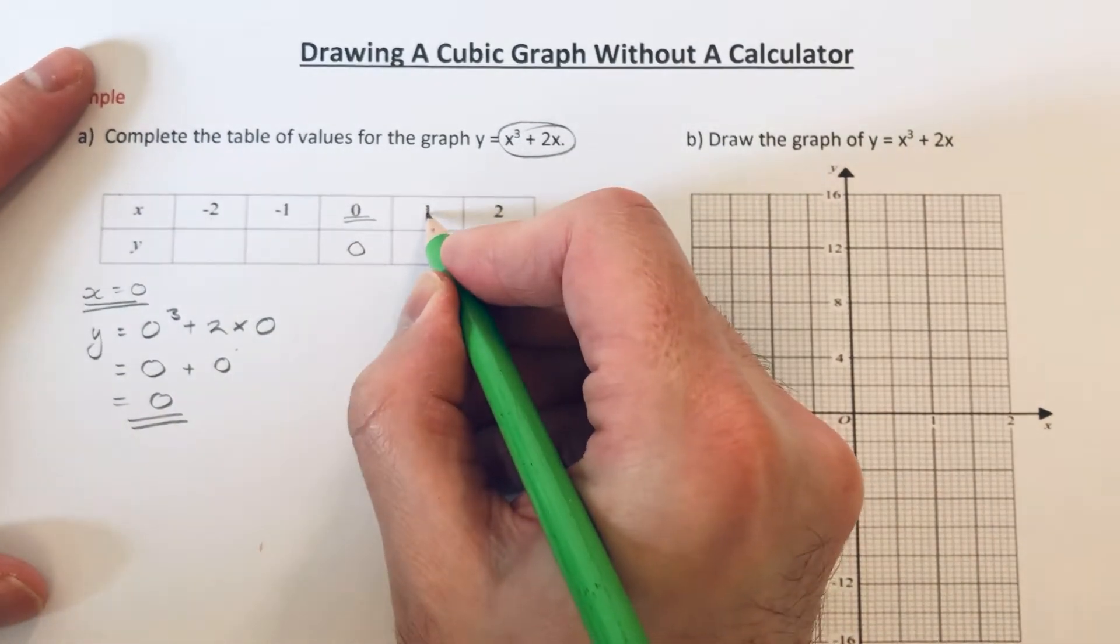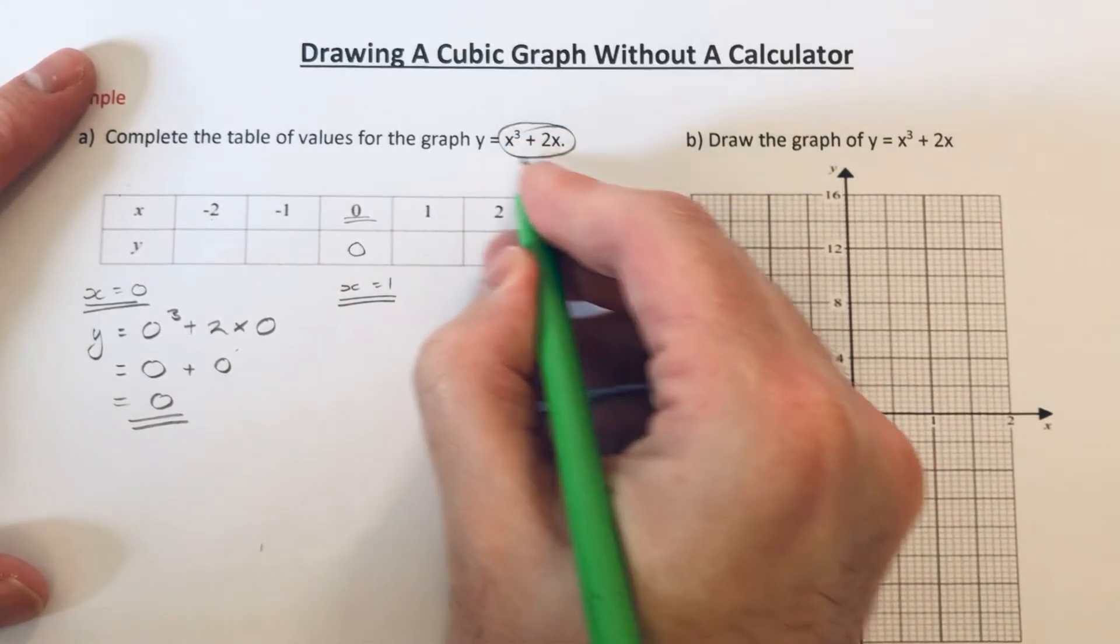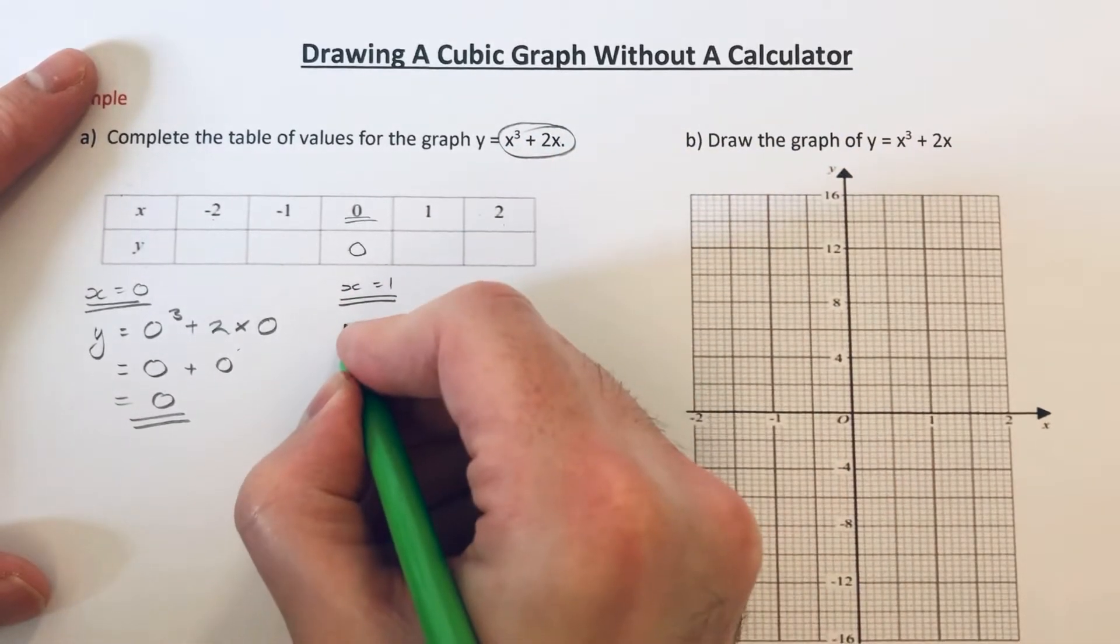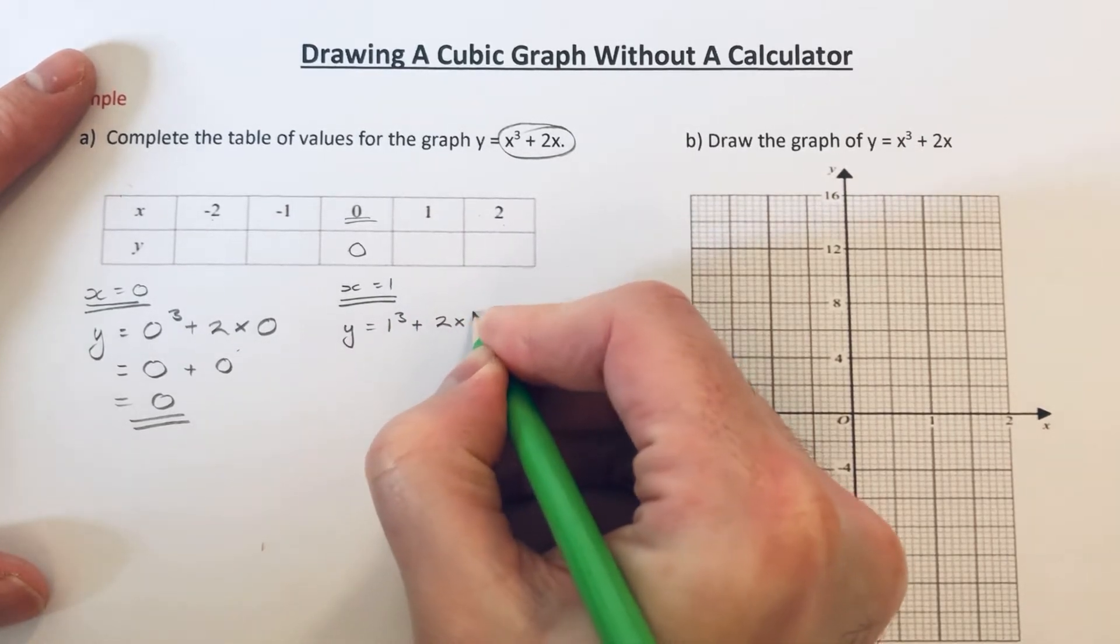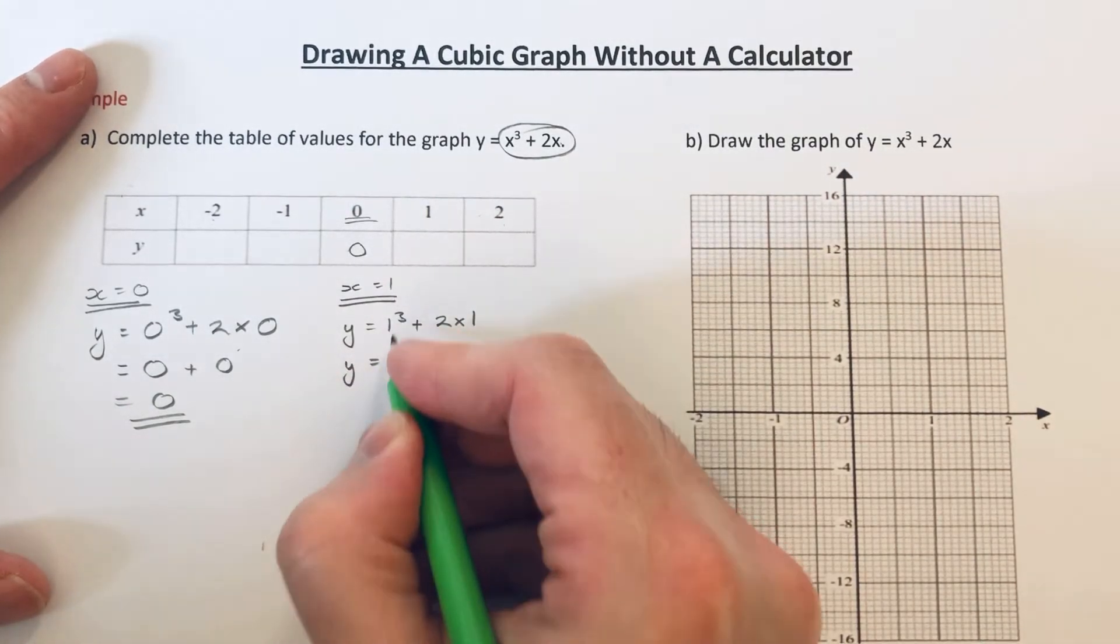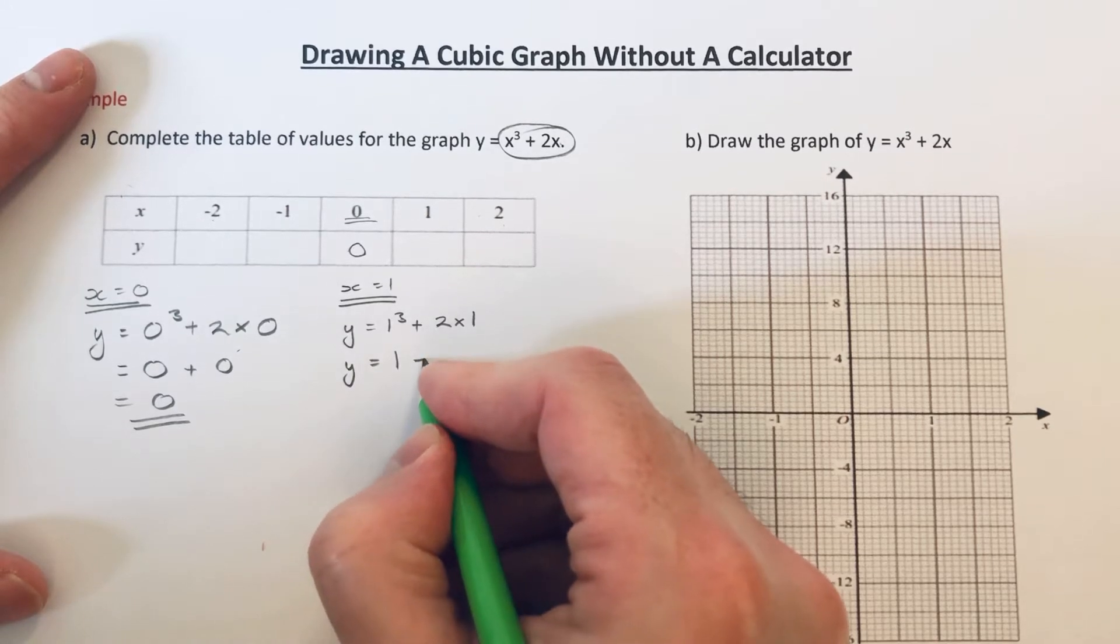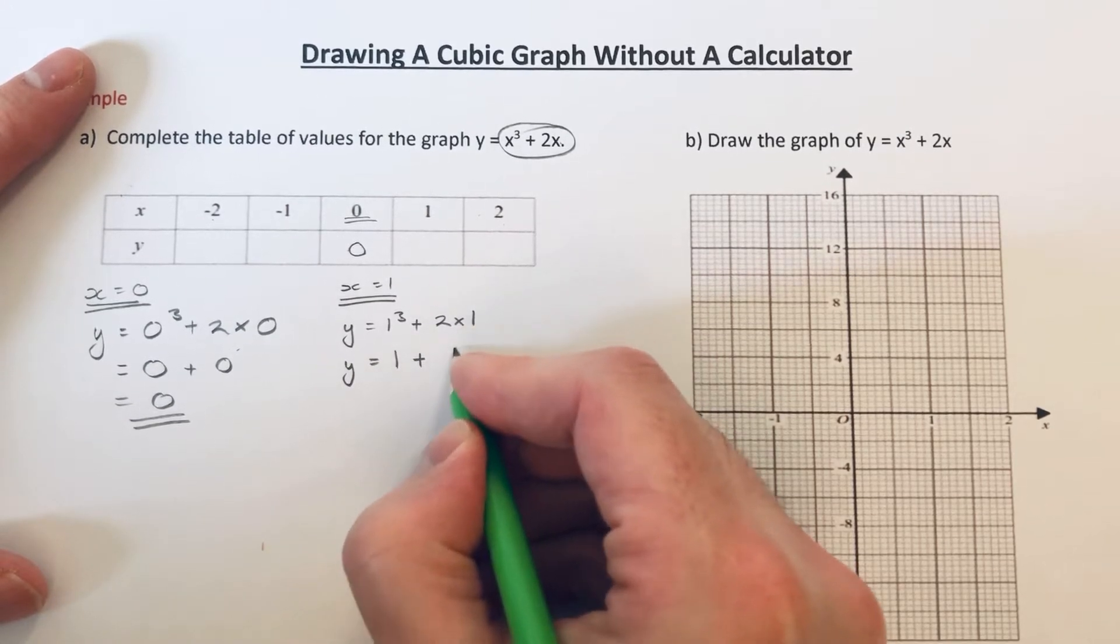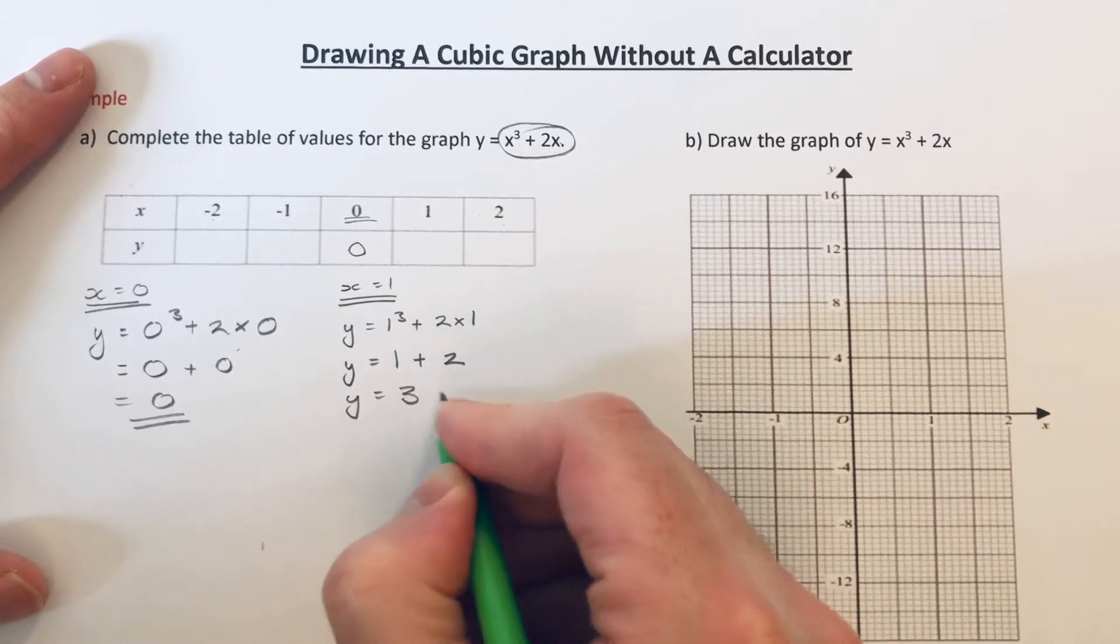So let's do x equals 1 next. So again, if we substitute it into the equation above, it would be 1 cubed plus 2 times 1. So I've changed both x's to 1. So 1 cubed is 1 times 1 times 1, which is 1. 2 times 1 is 2. And then we add those together to give us 3.